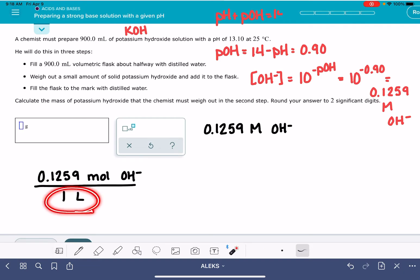We are not making a liter of solution. We're making 900 milliliters, which is the same as 0.9 liters. So we're not going to need a whole entire 0.1259 moles. We will just do a conversion here to figure out how many moles are actually necessary for the volume of our solution. We need 0.11331 moles of hydroxide.